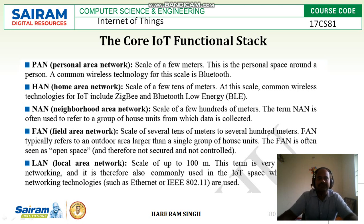Next is FAN, the Field Area Network, at a scale of several tens of meters to several hundreds of meters — for example, 20 meters to 200 meters, or 30 meters to 300 or 400 meters. If an object is present in this range and can be detected, it comes under the Field Area Network.